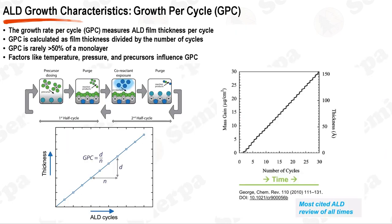The growth rate per cycle, GPC, in atomic layer deposition is a critical parameter that measures the film thickness formed in each ALD cycle. It provides important insight into the efficiency of the ALD process and the quality of the resulting thin films. The GPC is calculated as the slope of the graph representing film thickness as a function of the number of ALD cycles — specifically, the film thickness divided by the number of cycles. In an ideal ALD process, the GPC is constant and does not exceed the thickness of a single atomic or molecular layer, because each reactant layer is self-limiting.